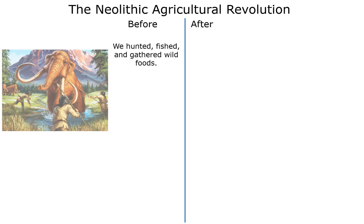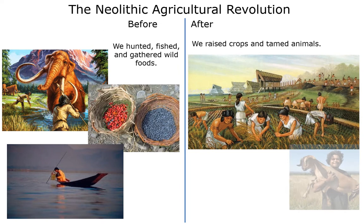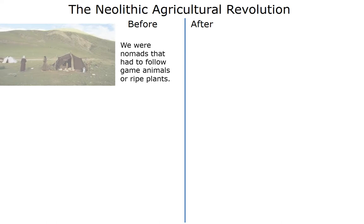We'll start with the Neolithic Agricultural Revolution. A revolution, by definition, changes something. Before the Agricultural Revolution, how did we get our food? We hunted, fished, and gathered wild foods. After, we raised crops and tamed animals.